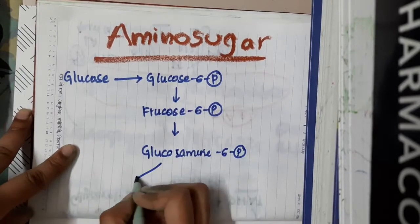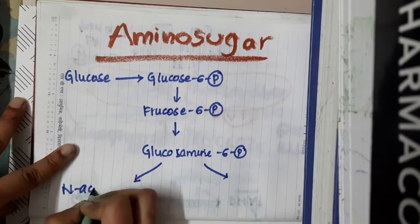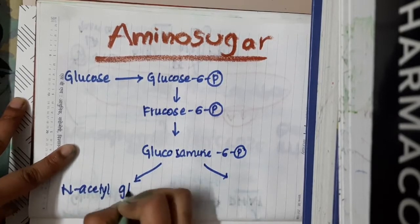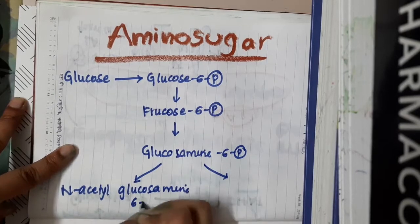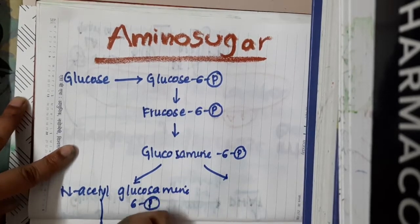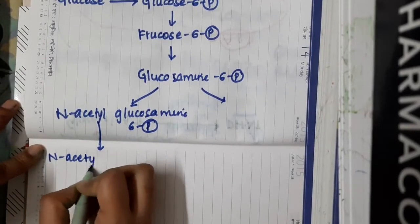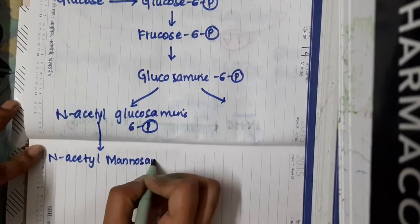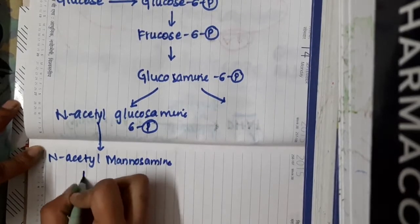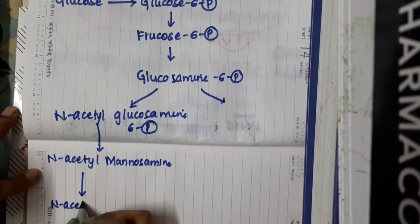This glucosamine-6-phosphate combines with N-acetyl-CoA to form N-acetylglucosamine-6-phosphate. This N-acetylglucosamine-6-phosphate undergoes epimerase and it forms N-acetylmannosamine. This N-acetylmannosamine, in the presence of PEP, forms N-acetylneuraminic acid.